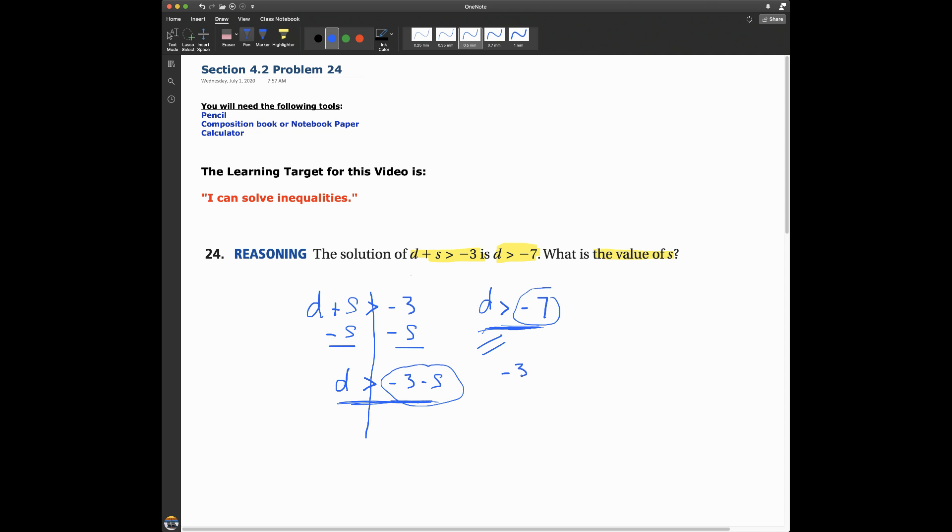Negative 3 minus S equals negative 7. And let's go ahead and figure out what S equals now. And that will tell us the value of S that we need. So the first thing I need to do is add 3 to both sides. So negative S equals negative 4.